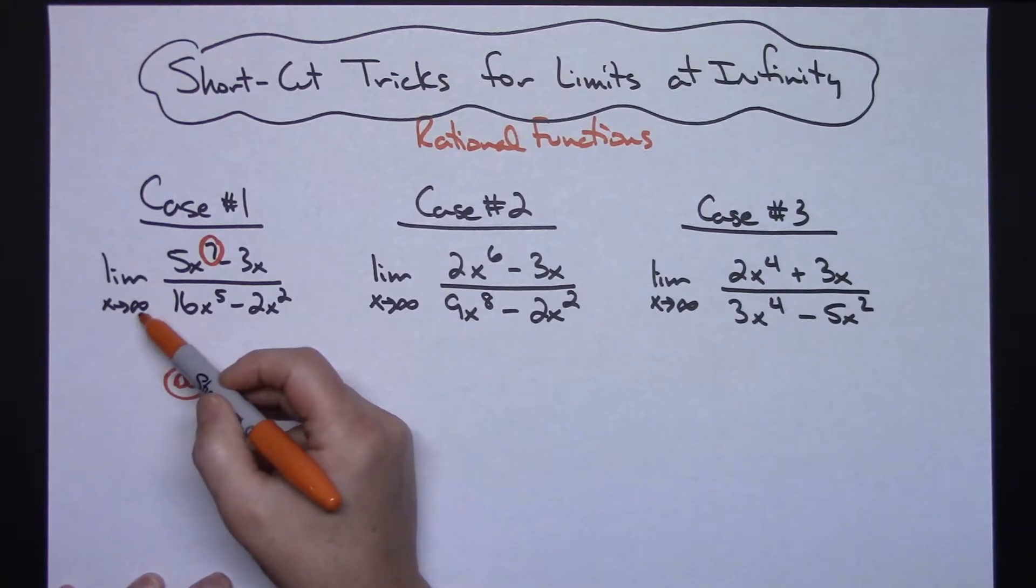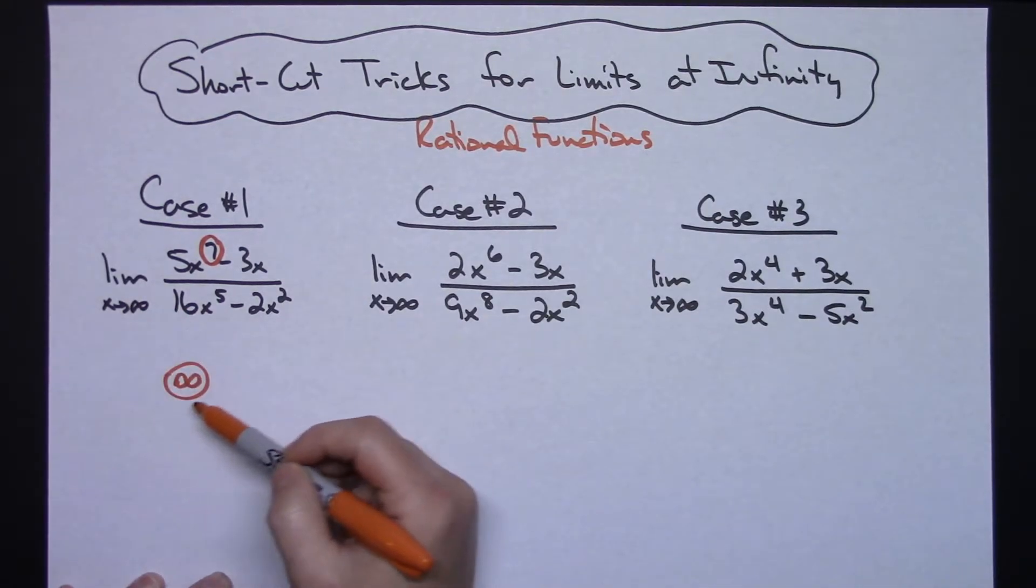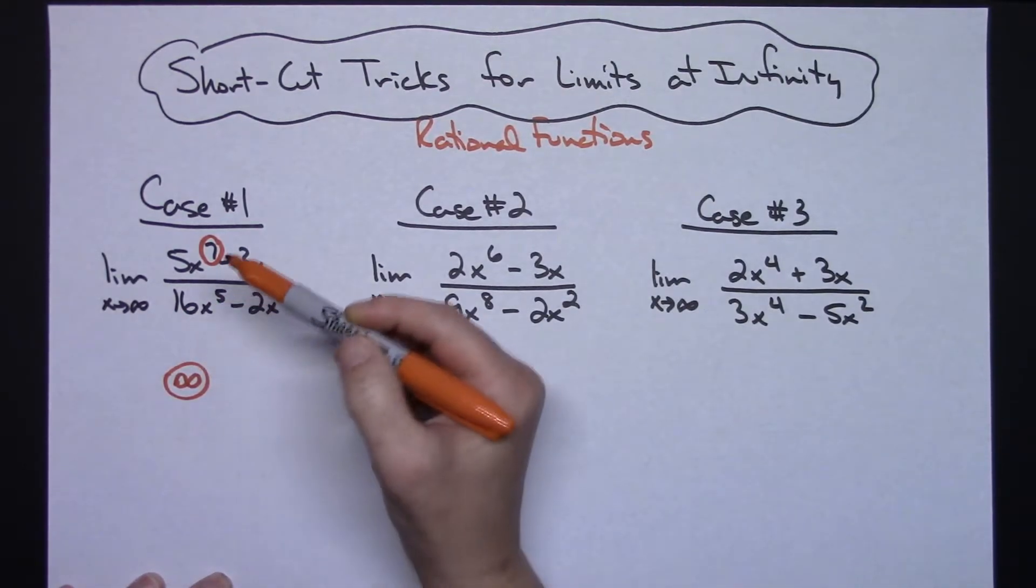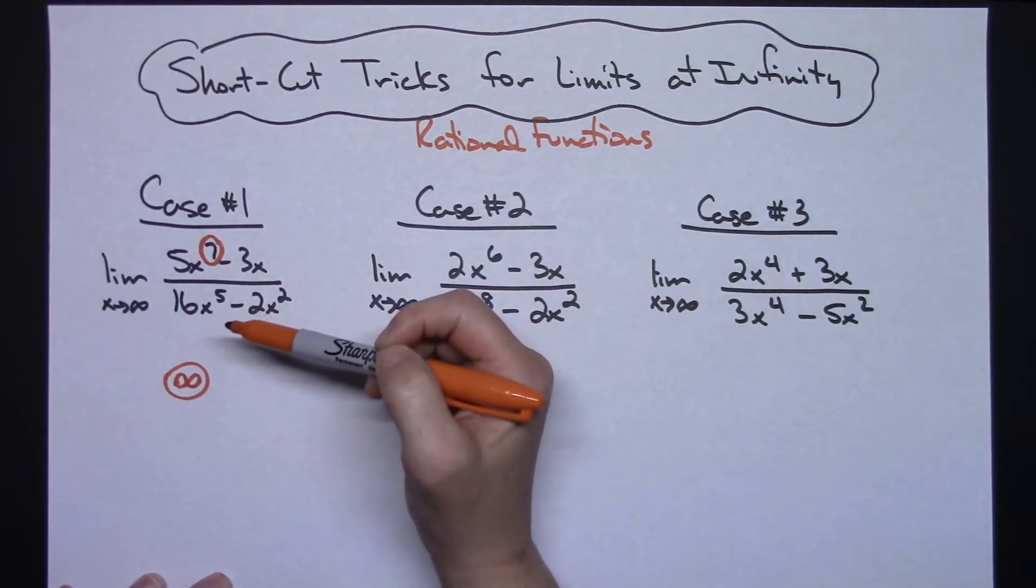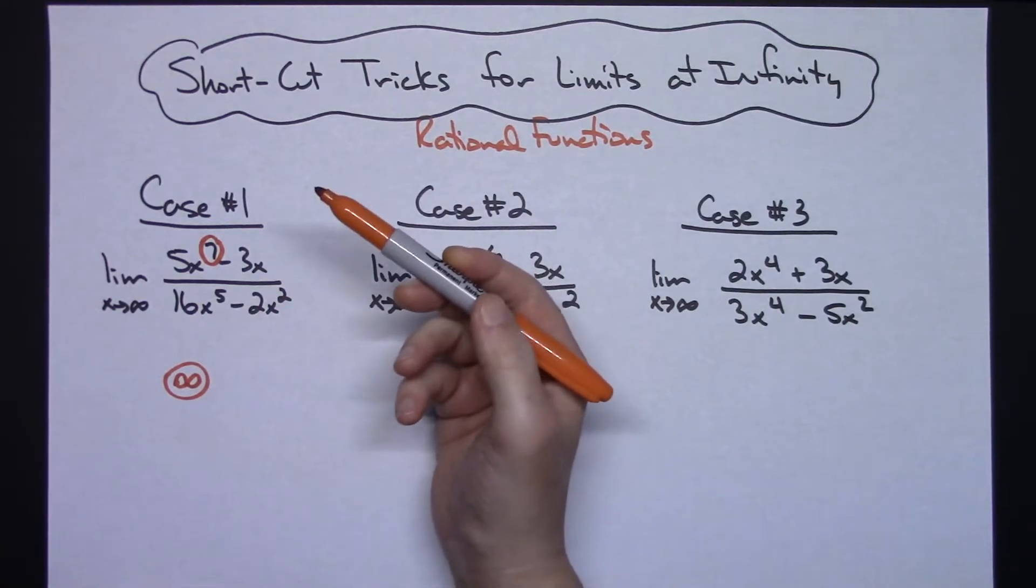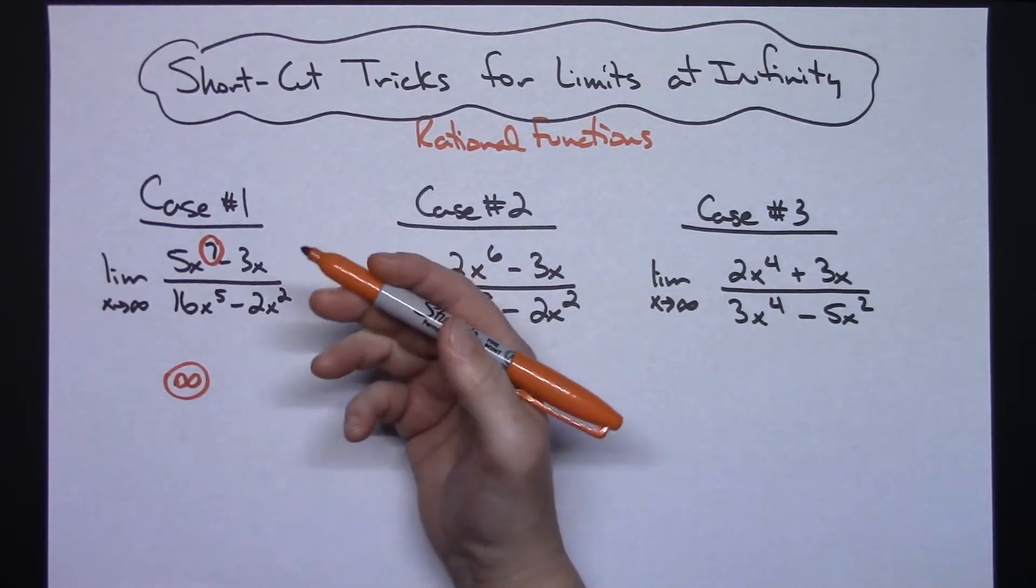If X was approaching negative infinity in this case, then my limit would be negative infinity. If you work this out algebraically, what's probably going to happen is that you are going to draw the conclusion that the limit does not exist because you probably are going to have a division by zero.